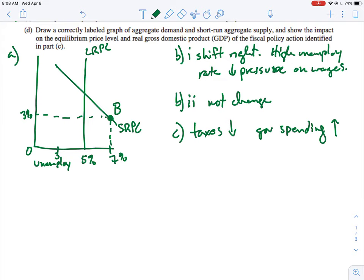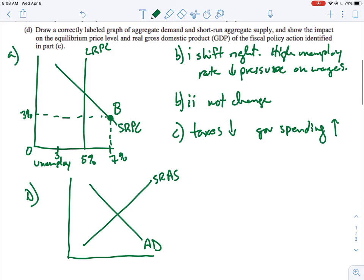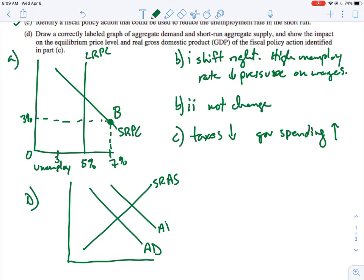I'm going to slide down here and we'll do now part D. So correct label graph of aggregate demand and short run aggregate supply show the impact on the equilibrium price level and real GDP of the fiscal policy action identified in C. So when we decrease taxes or increase spending, what is going to happen? So you've got your downsloping aggregate demand, you've got your upsloping SRAS, and if you decrease taxes, then that's going to be a situation where businesses and people will increase their spending, so aggregate demand will shift to the right.